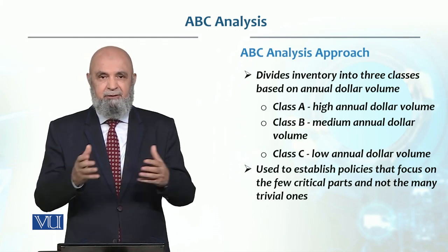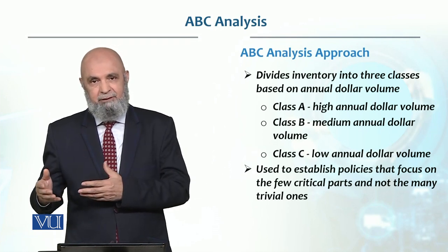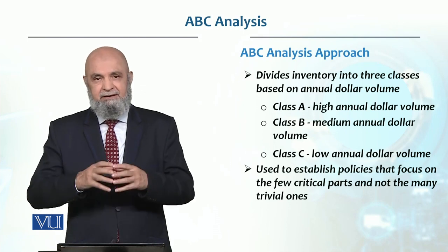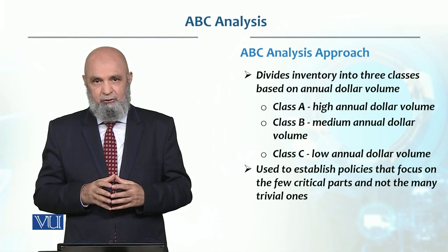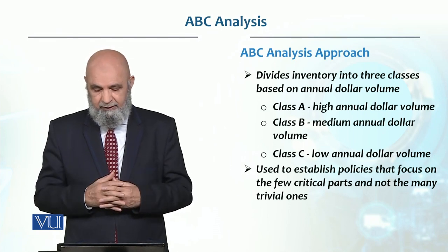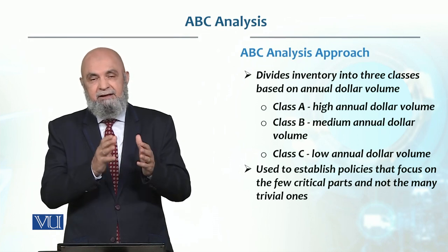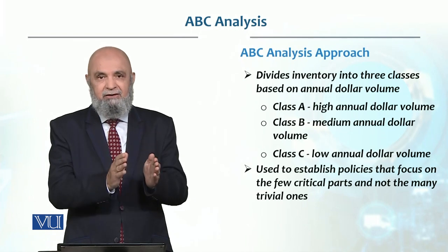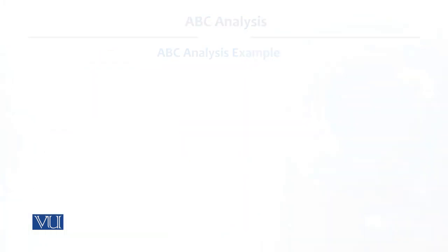So A is 70%, B is 25%, and C is 5%, making the total value 100%. Each type has a different policy. For example, if a product is very critical, we need to monitor it tightly.